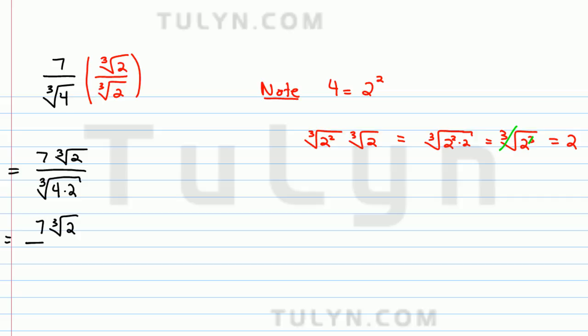So we leave them as is. And then in the bottom this becomes cube root of 8, which we know to be cube root of 2 cubed, and this simplifies simply to just 2.